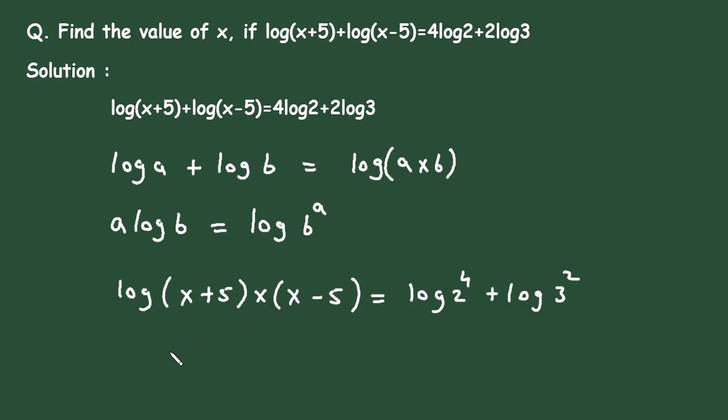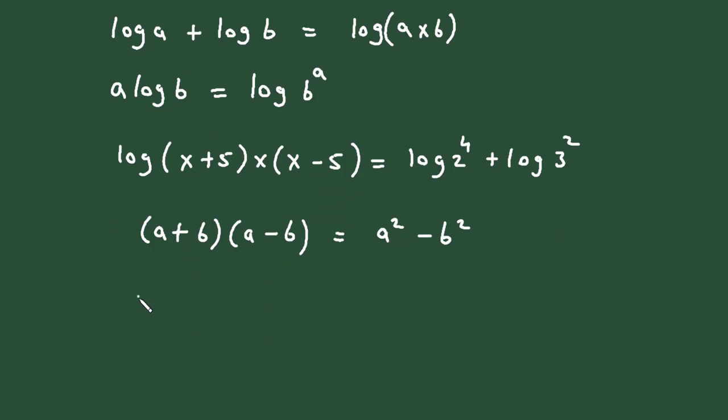Now there is one more formula for this. We know that (a+b)(a-b) is equal to a² - b². So let's put this formula here. So this will be log(x² - 5²) is equal to, now this term will be log 2 to the power 4 means it is 16, so this will be log 16 then plus log 3 to the power 2, it means 9.